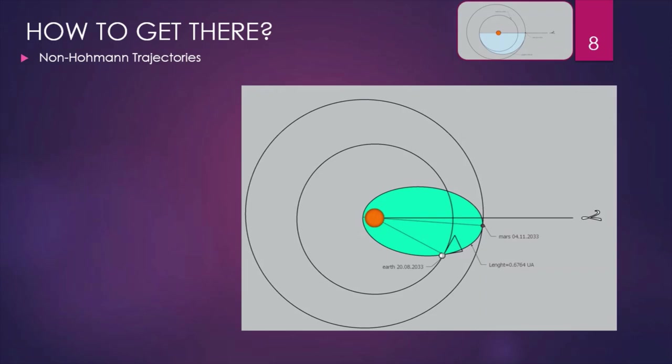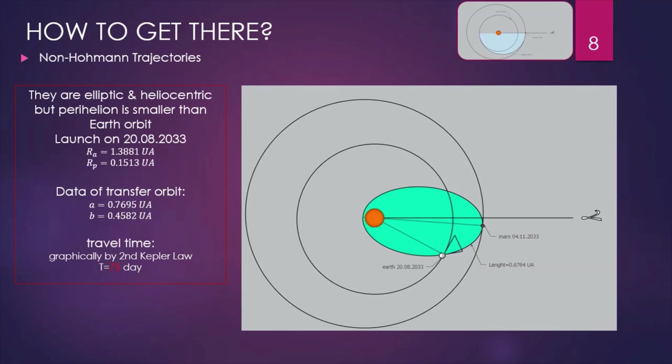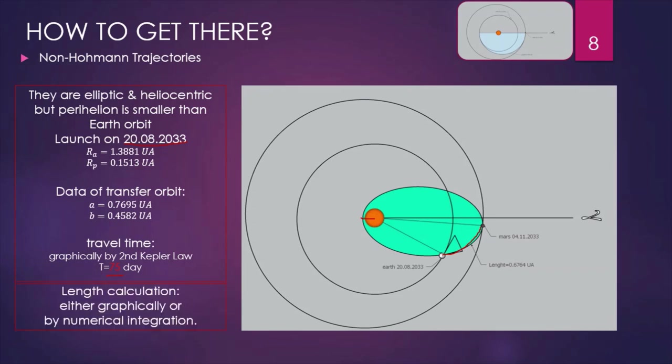Are different trajectories possible which are not Hohmann ones? Let's say elliptical and heliocentric, but with the perihelion smaller than the Earth's orbit, as displayed here. In this case, we need to still wait up to 20th of August 2033. But the transfer time will be much smaller — only 75 days. We are only traveling part of the ellipse, from this position to this position. Why we are not choosing this trajectory, we will say later on.